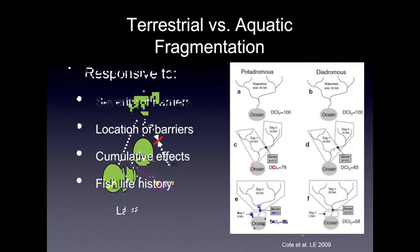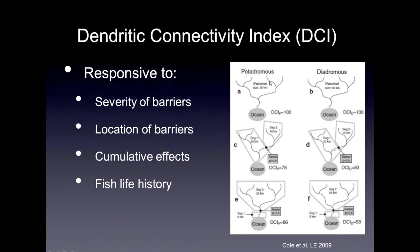We simulated in a model watershed how the DCI behaved when we changed different things. We changed the severity of the barriers — defining barrier passability as zero for a completely impassable barrier and one for a completely passable barrier. We modeled how the DCI changed with barrier severity, the location of barriers, the cumulative effects when adding barriers, and also fish life history. You can see some of this in this figure from our very first paper from 2009.